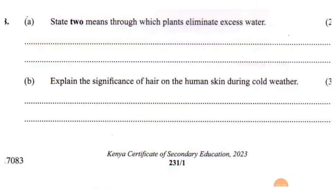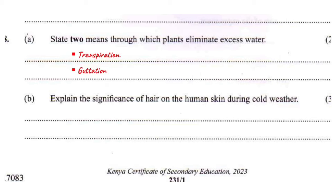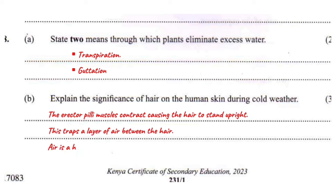During cold weather, when temperatures are low, erector pili muscles contract. The hairs are attached to a muscle known as the erector pili muscle. When temperatures are low, this muscle contracts, causing the hair to become upright. This traps a thin layer of air between the hairs. Air is a good insulator because it is a poor conductor of heat, so it reduces the amount of heat lost from the body to the surrounding.